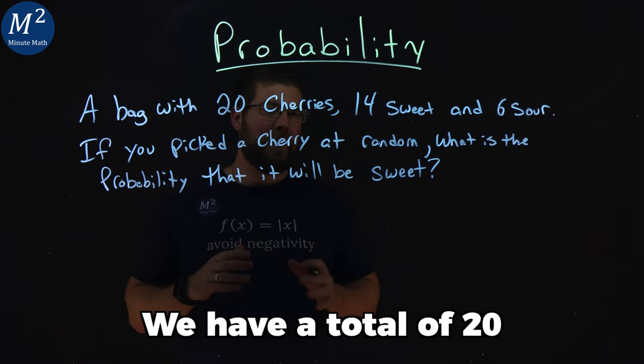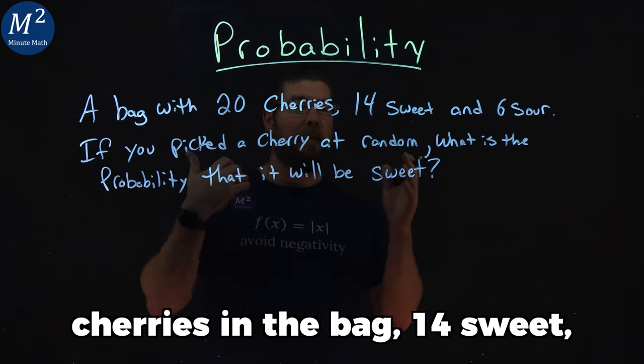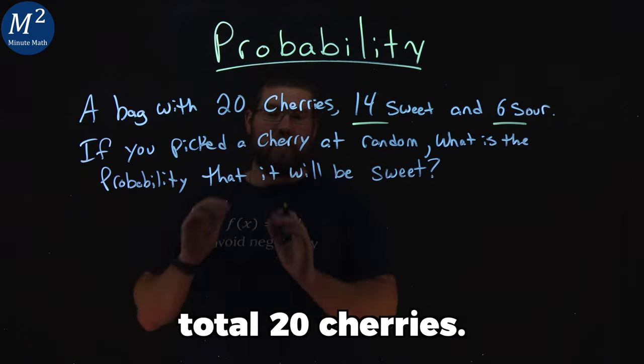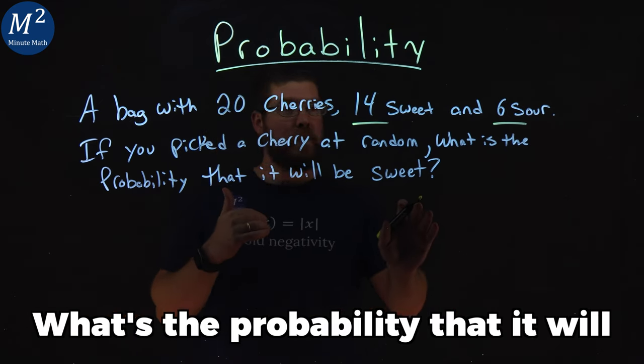We have a total of 20 cherries in the bag: 14 sweet, 6 sour. So that adds to the total of 20 cherries. What's the probability that it will be sweet?